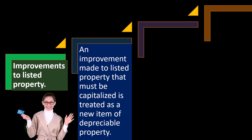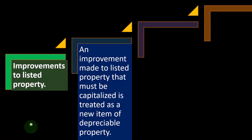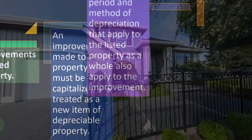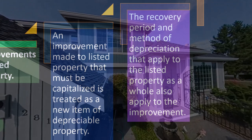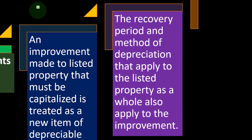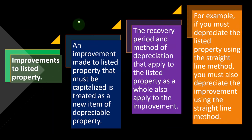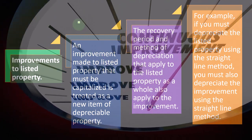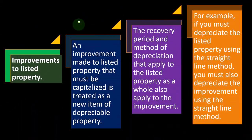Improvements to listed property: an improvement made to listed property that must be capitalized is treated as a new item of depreciable property — similar to improvements we've seen before. If it's an improvement increasing the life of the property, you'd put it on the books as an asset, a separate item. The recovery period and method of depreciation that applies to the listed property as a whole also apply to the improvement. For example, if you must depreciate the listed property using the straight-line method, you must also depreciate the improvement using the straight-line method.